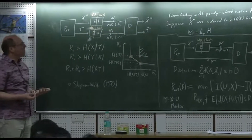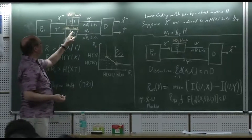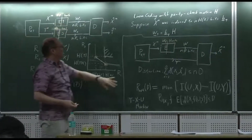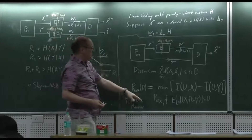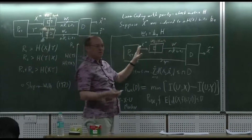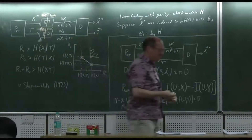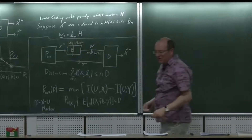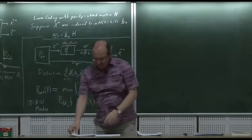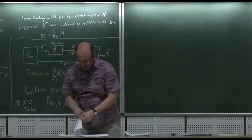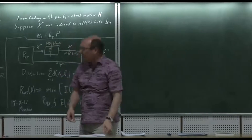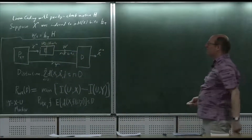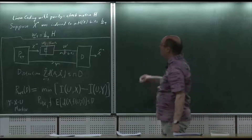That covers the source coding results. The key takeaways: from the Slepian-Wolf problem we learned about hashing, and from the Wyner-Ziv problem we learned about auxiliary random variables. The last topic we discussed was a channel coding problem — reliable communications — where the channel is governed by a state.